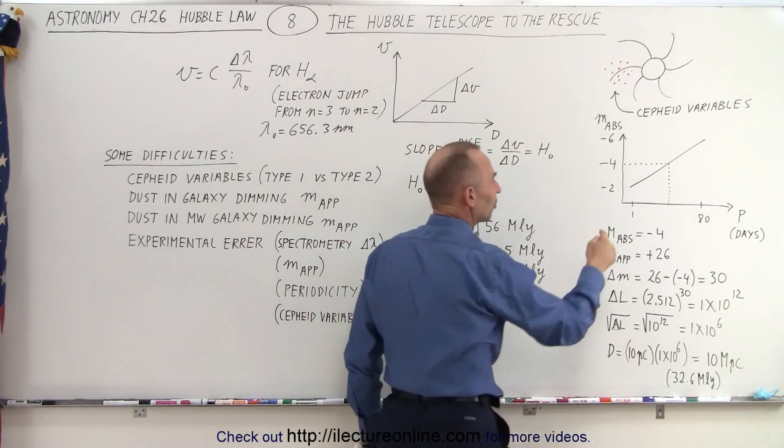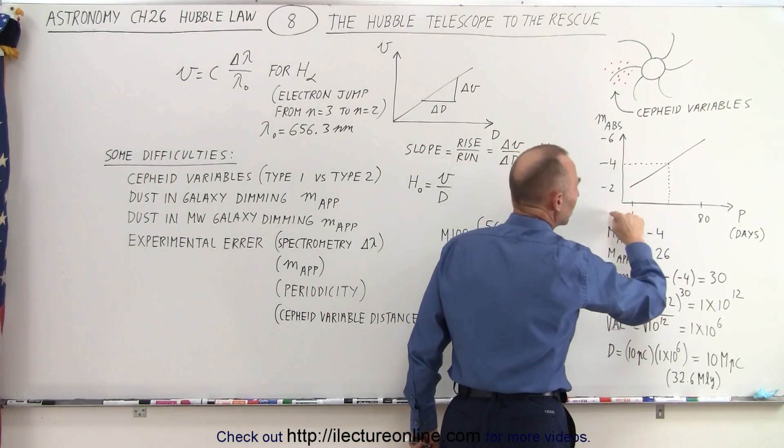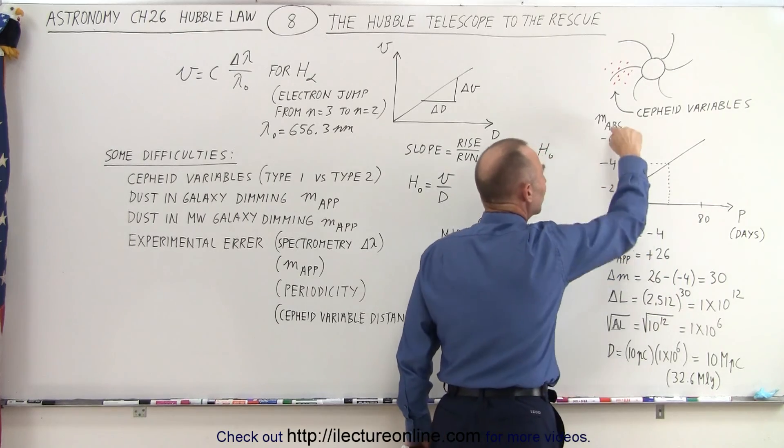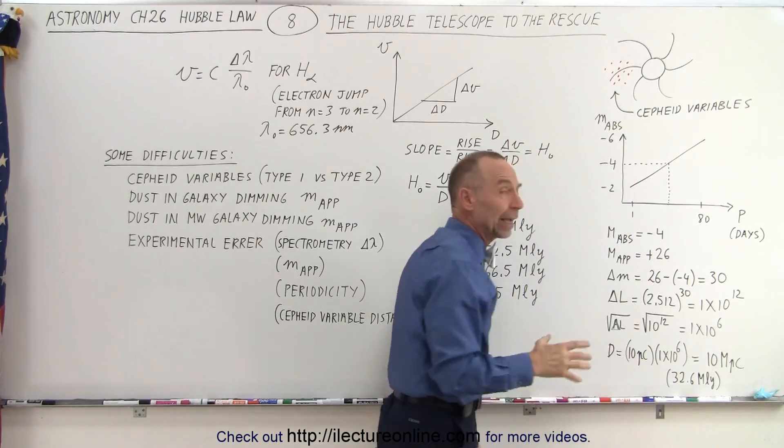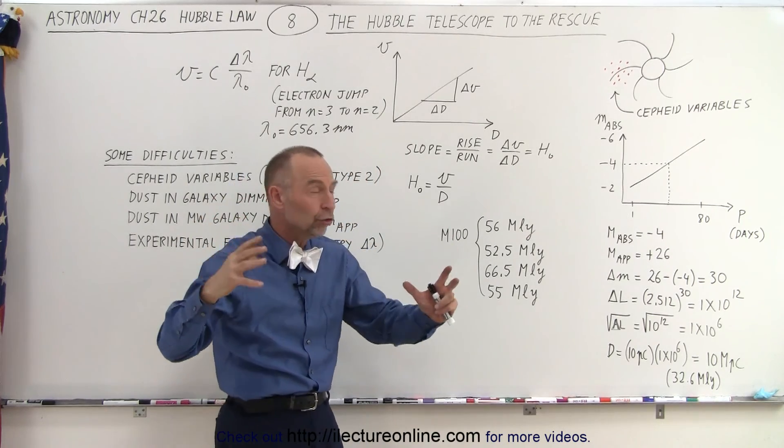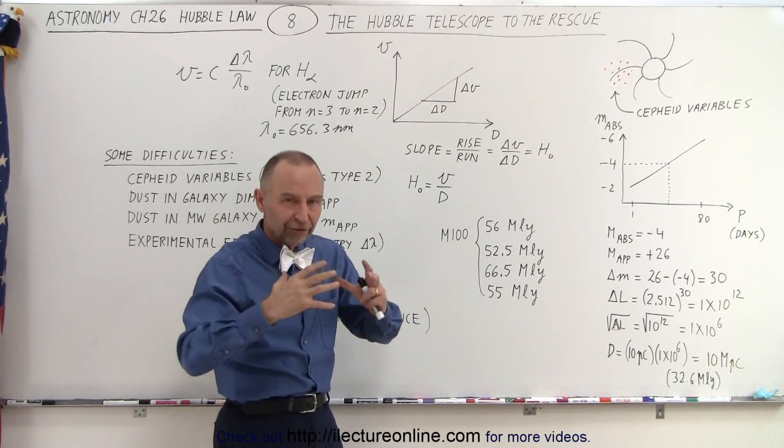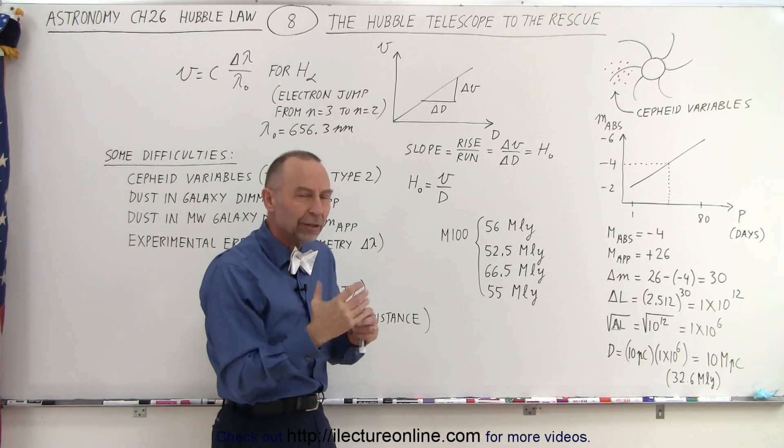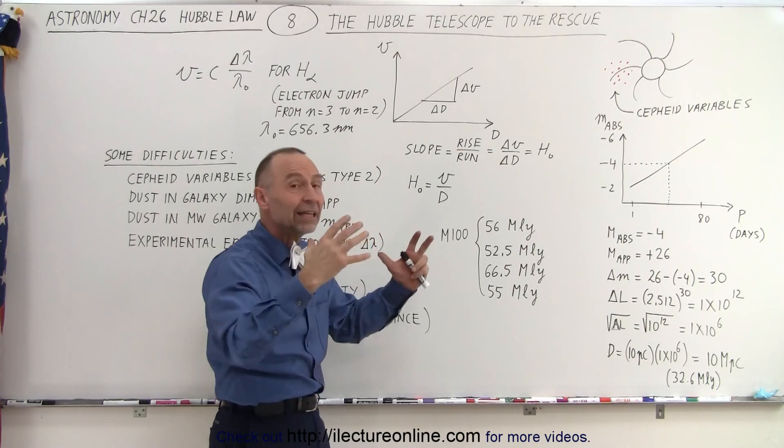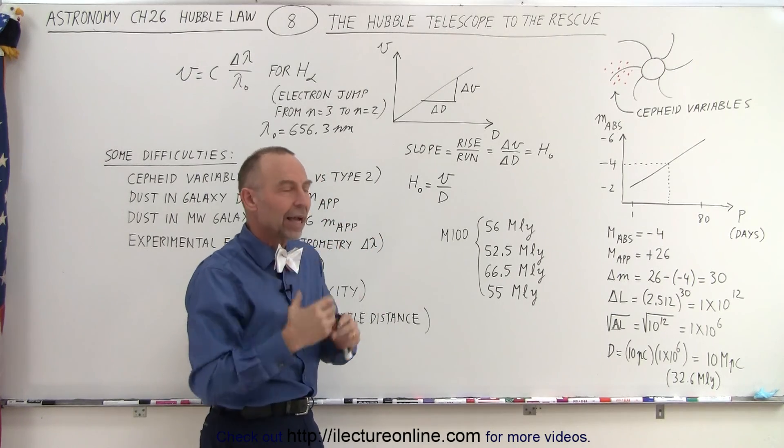Remember that with Cepheid variables there's a linear relationship between the periodicity—the period of brightness and dimness—versus the absolute brightness, the absolute magnitude of the Cepheid variable. Cepheid variables are very large red giants that are fluctuating in what we call the instability strip on the HR diagram, and so the periodicity gives them an indication of how bright they actually are.